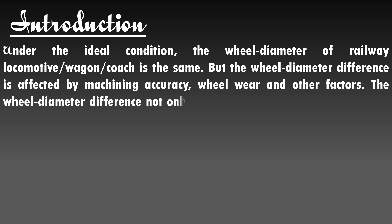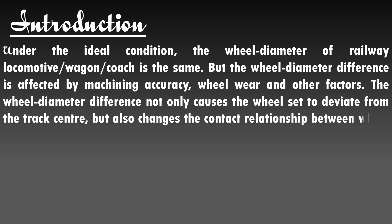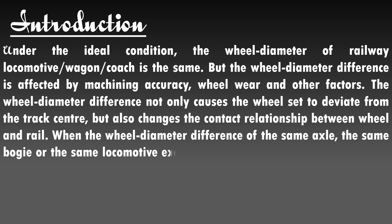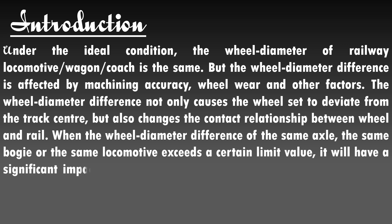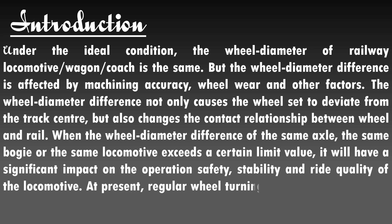The wheel diameter difference not only causes the wheel set to deviate from the track center, but also changes the contact relationship between the wheel and the rail. When the wheel diameter difference of the same axle, the same bogie or the same locomotive exceeds a certain limit value, it will have a significant impact on the operation, safety, stability and ride quality of the locomotive or the coach.